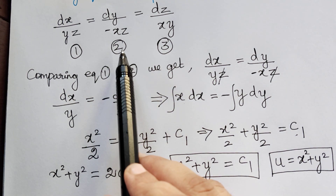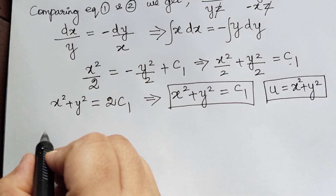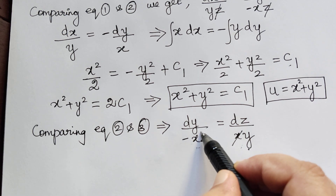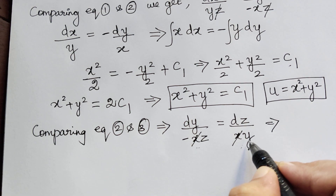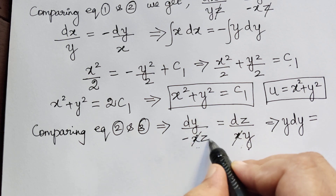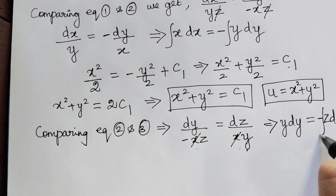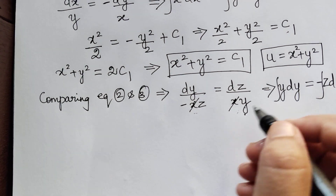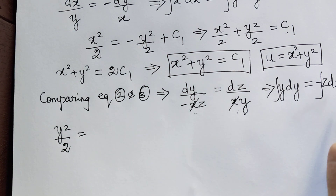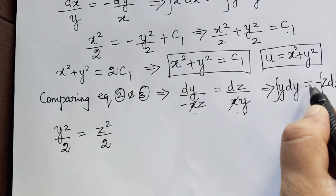I am going to compare equations 2 and 3. From equation 2 and 3, we observe that x can be cancelled on both sides. Taking y to the left and negative z to the right, we get y dy equals negative z dz. Integrating both sides, the integration of y gives y squared over 2 equals negative z squared over 2 plus constant c2.